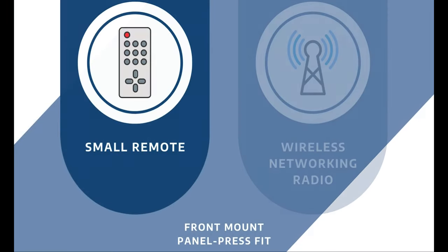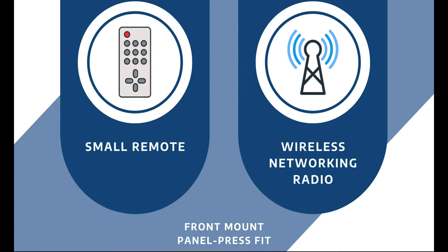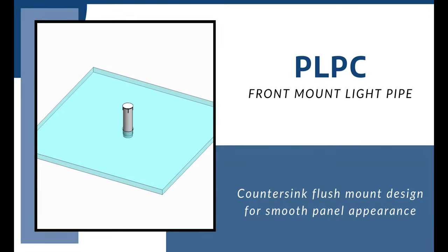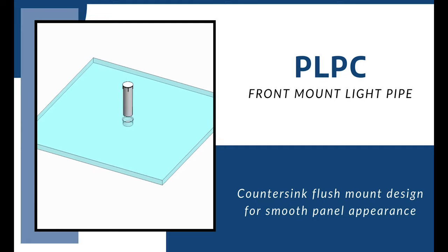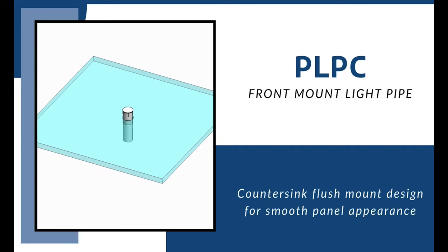A front mount panel press fit light pipe is best used for a small remote or wireless networking radio. The crush rib feature on the body of the light pipe helps ensure the light pipe stays secure. One example of a front mount light pipe is our PLPC series. It has a countersink flush mount design for smooth panel appearance.